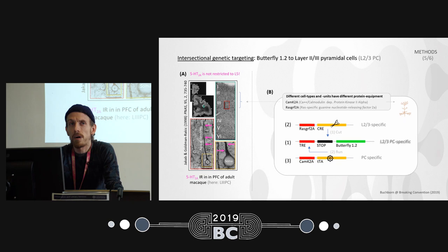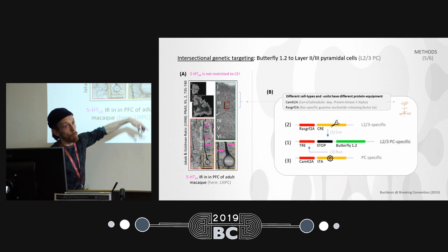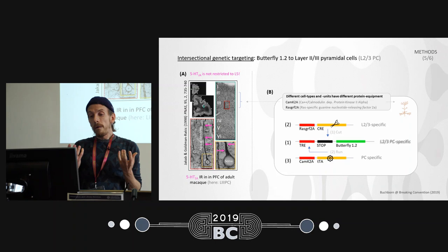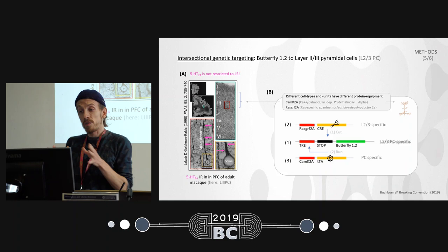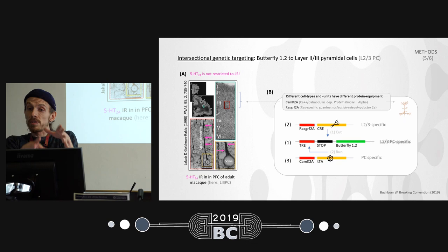Now that we know how Butterfly works, we need to target it to the right cells. We decided on layer 2/3 pyramidal cells. Some may wonder why not layer 5 — we chose layer 2/3 because their apical dendrites also express the serotonin 2A receptor, not as much as layer 5 but we want to add another puzzle piece for a holistic picture. We need to ensure Butterfly is expressed only by these cells — not in the liver, kidney, hippocampus — just these specific cells.